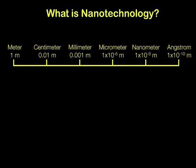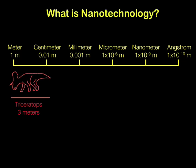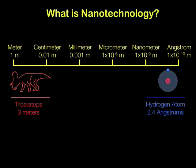Let's see if we can frame that in a way which is easier to picture. For anyone who loves dinosaurs, a triceratops is about three meters long, so we'll put that at the large end of the scale. At the other end of the scale, we have a hydrogen atom, which is a main component in a water molecule — that's about 2.4 angstroms in diameter, so quite a bit smaller.